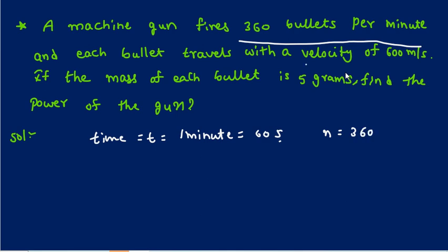Each bullet travels with a velocity of 600 meters per second. So, the velocity of each bullet is 600 meters per second.